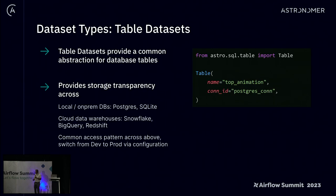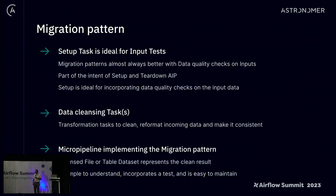Once we have these dataset types representing concrete representations, we start getting into the particular patterns. How would we actually use these datasets in a migration pattern? For a migration pattern — which is frankly one of the simplest starting points of almost any DAG anybody writes with Airflow — you get data from a source system, typically an input file on S3 or a GCS bucket, and then you process it.